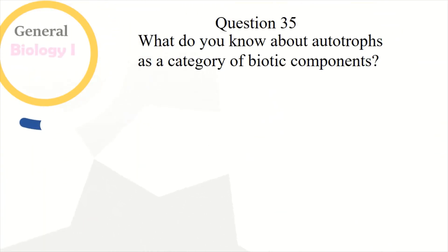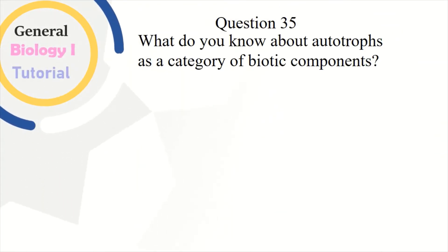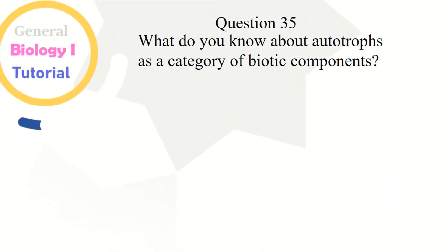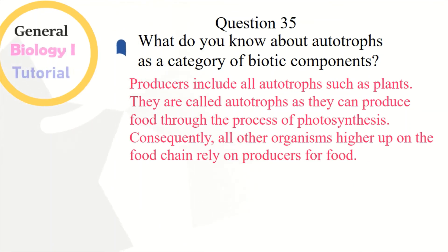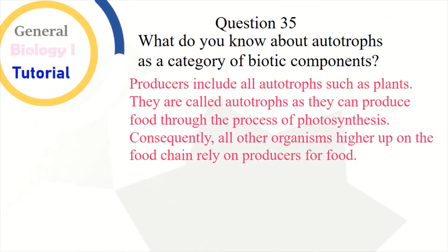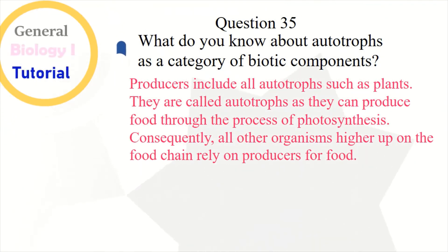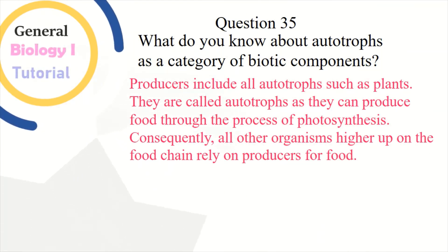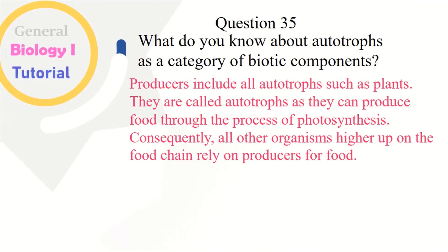Question 35: What do you know about autotrophs as a category of biotic components? Producers include all autotrophs such as plants. They are called autotrophs as they can produce food through the process of photosynthesis. Consequently, all other organisms higher up on the food chain rely on producers for food.